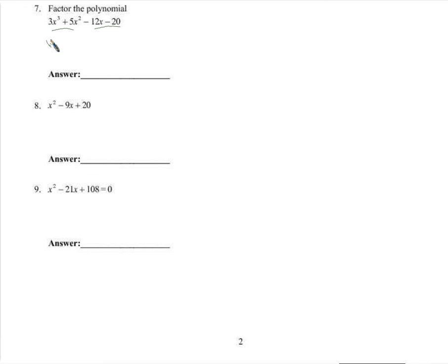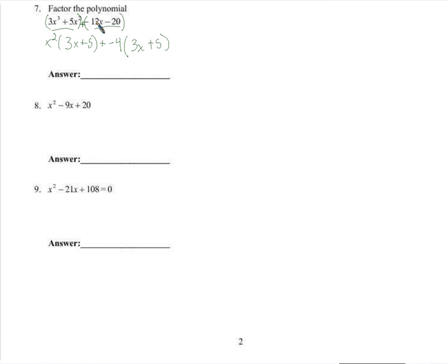So we look at the first group and say what do they have in common — they have an x squared in common, leaving us with 3x plus 5. Remember what we have is this group plus this group, including the sign in front — the negative 12. So what do we have in common in the second group? We have a negative 4 in common, which leaves us with 3x plus 5. Negative 4 times 3x is negative 12x, and negative 4 times 5 is negative 20. So now we have two terms, and these two terms have a 3x plus 5 in common. We factor out that 3x plus 5 and we're left with x squared minus 4.